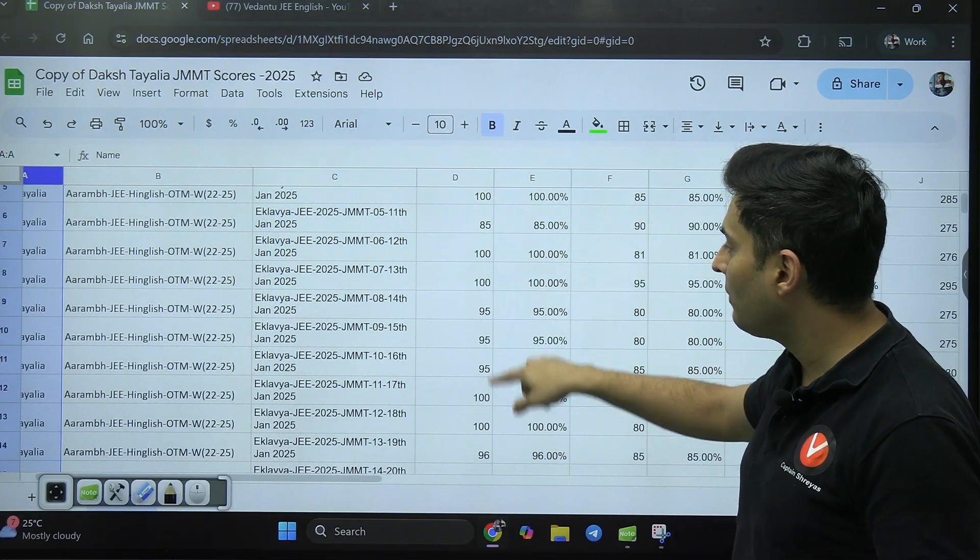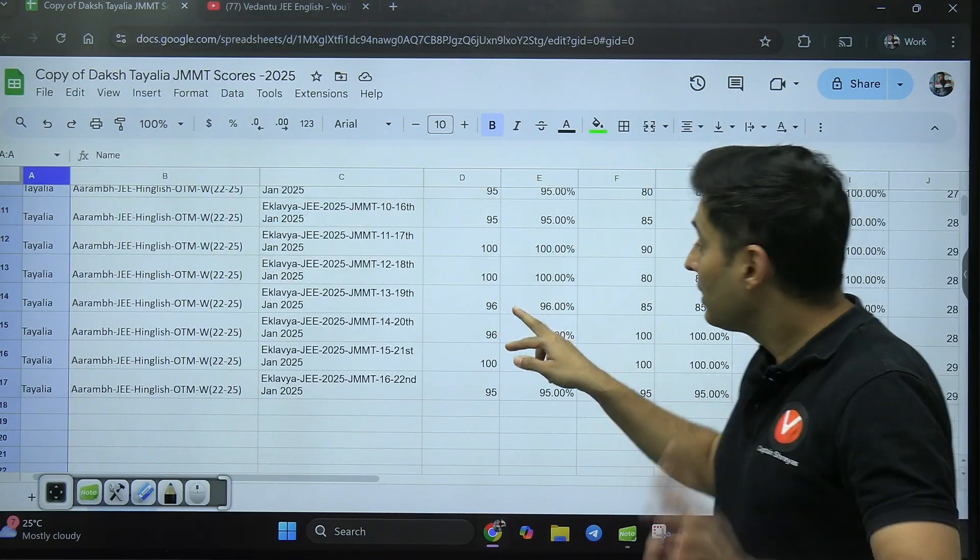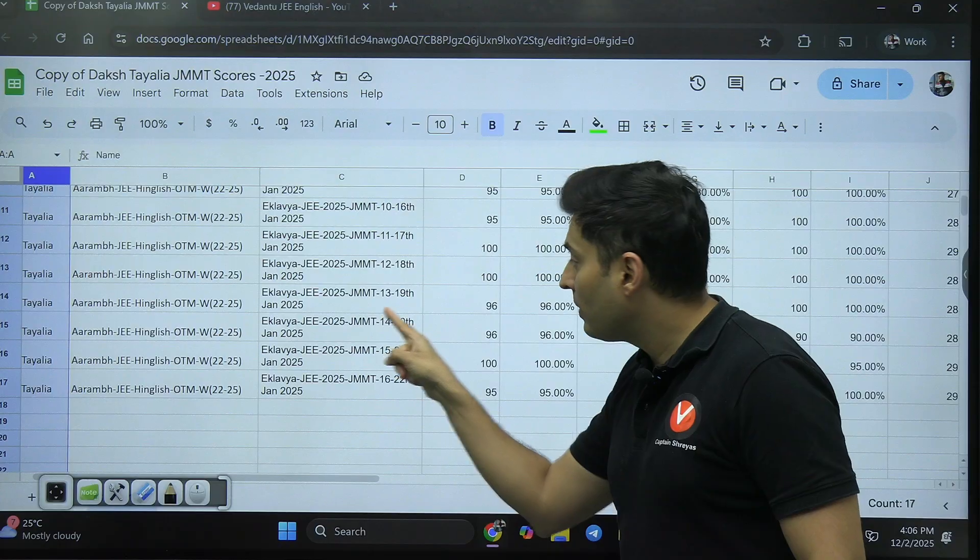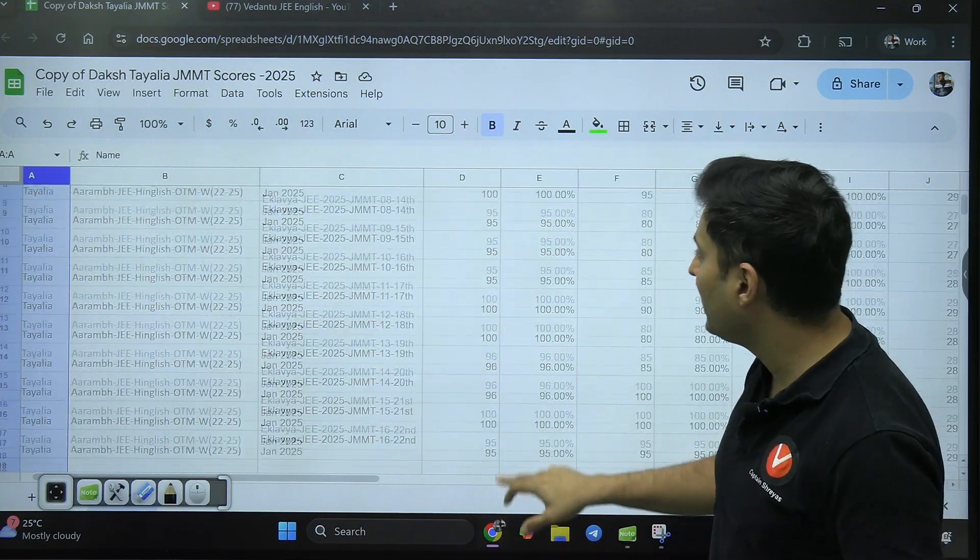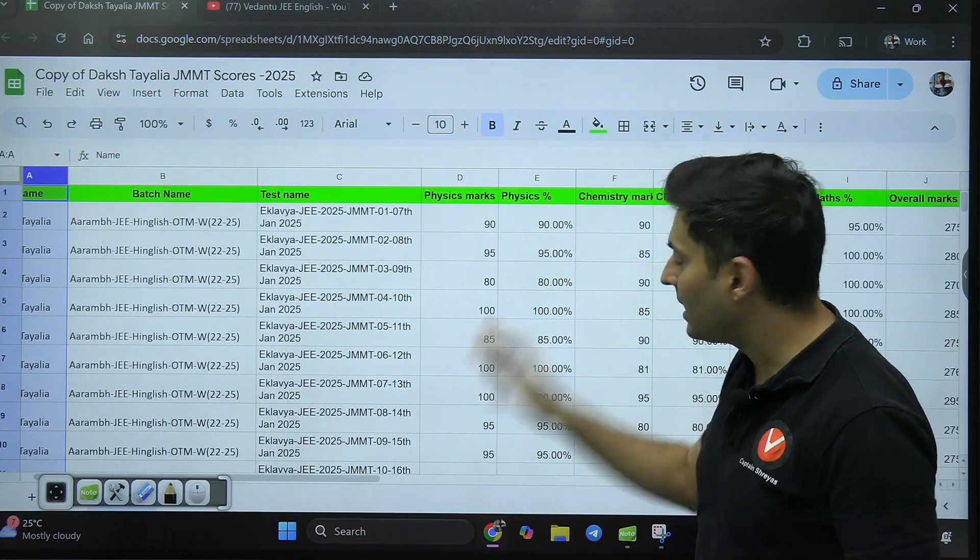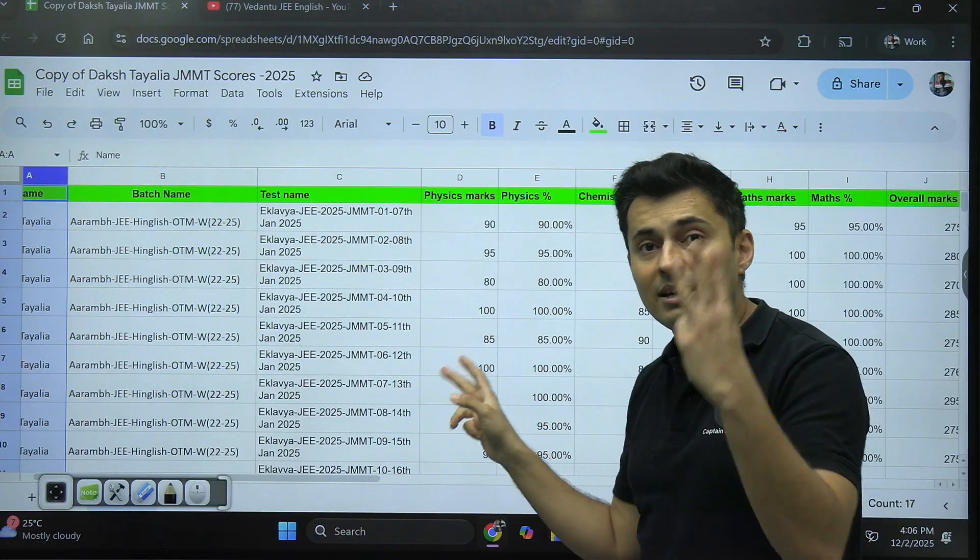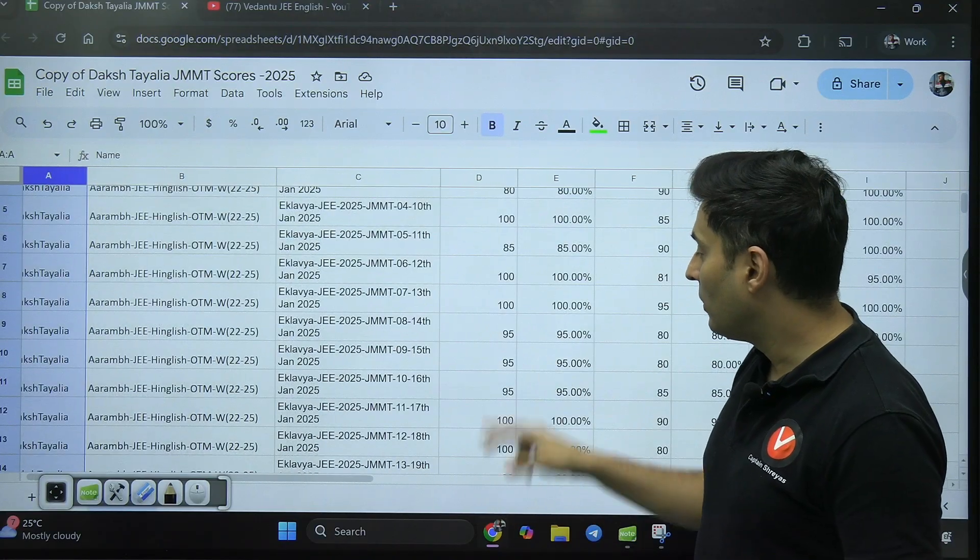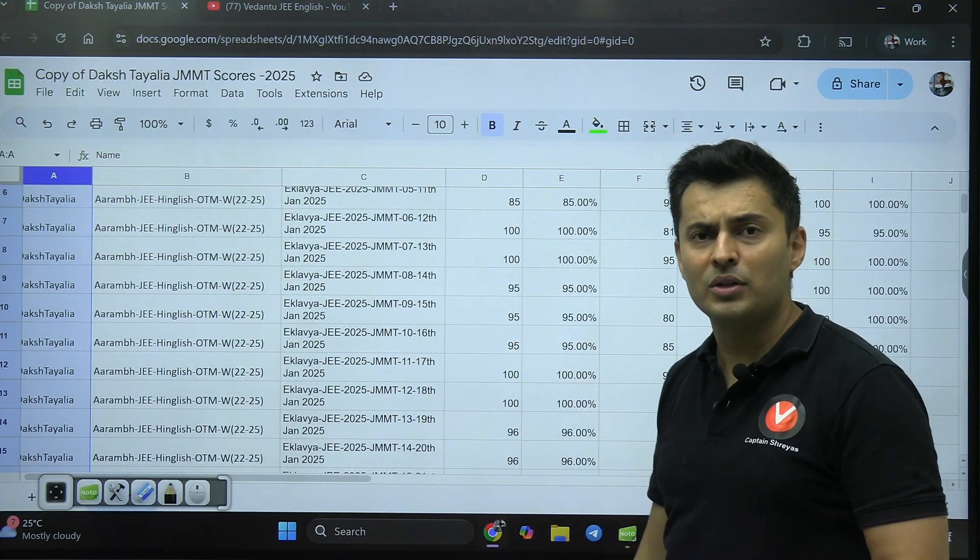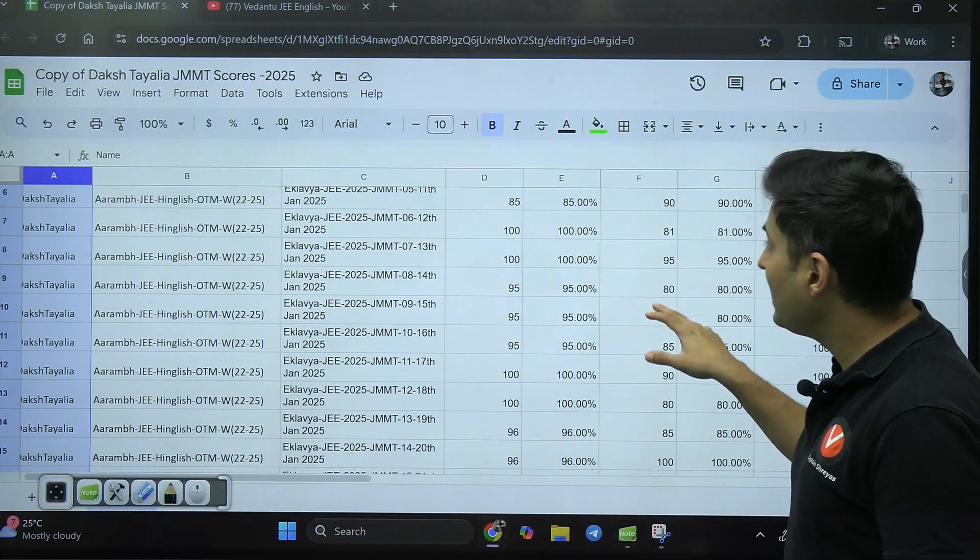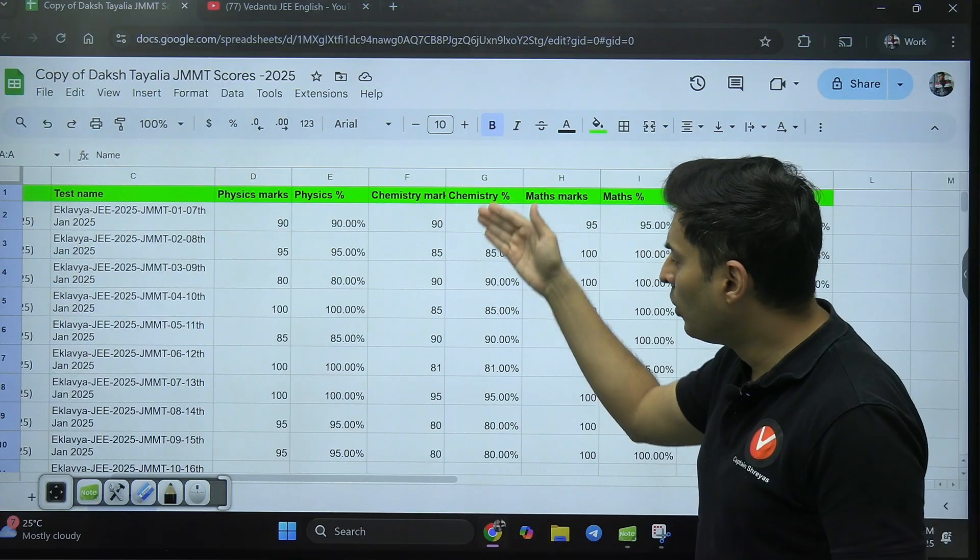In Physics, if you notice, most of the times the scores are multiples of five: 90, 95, 80, 85, 95, except for these two tests. That means in these two tests there were two questions Daksh did not know. Rest all the tests, at least he attempted everything.